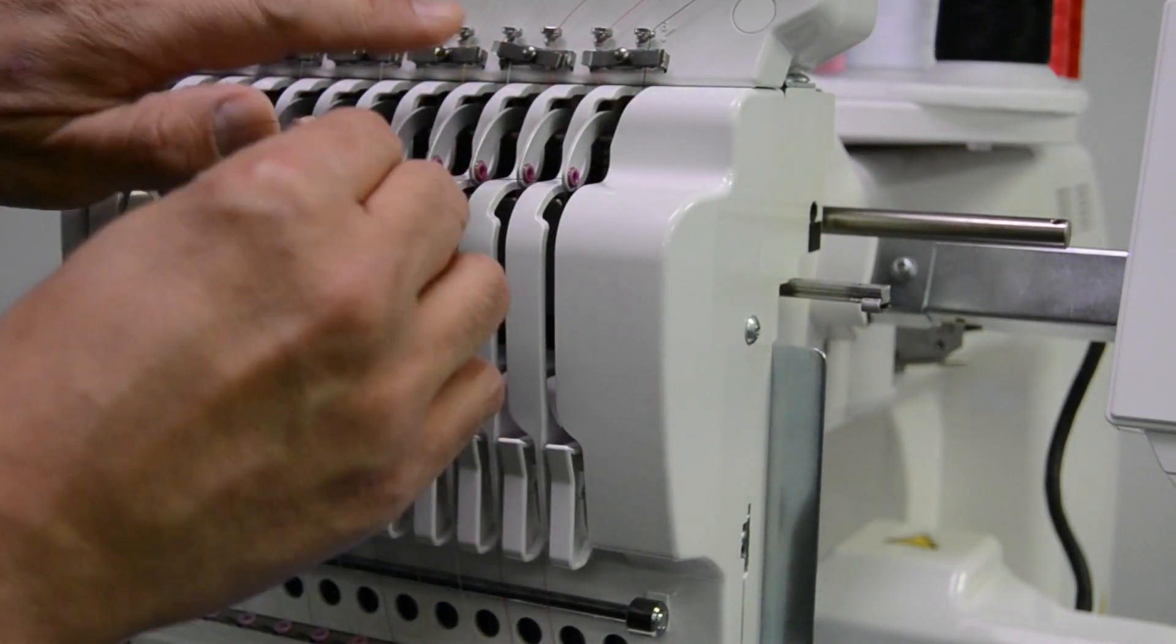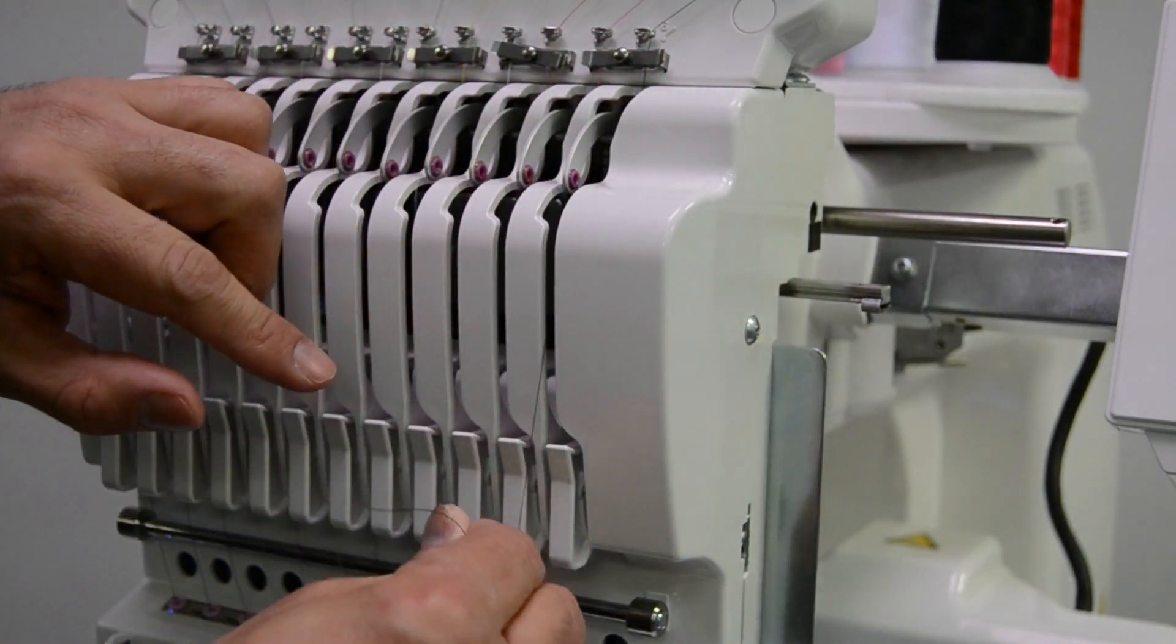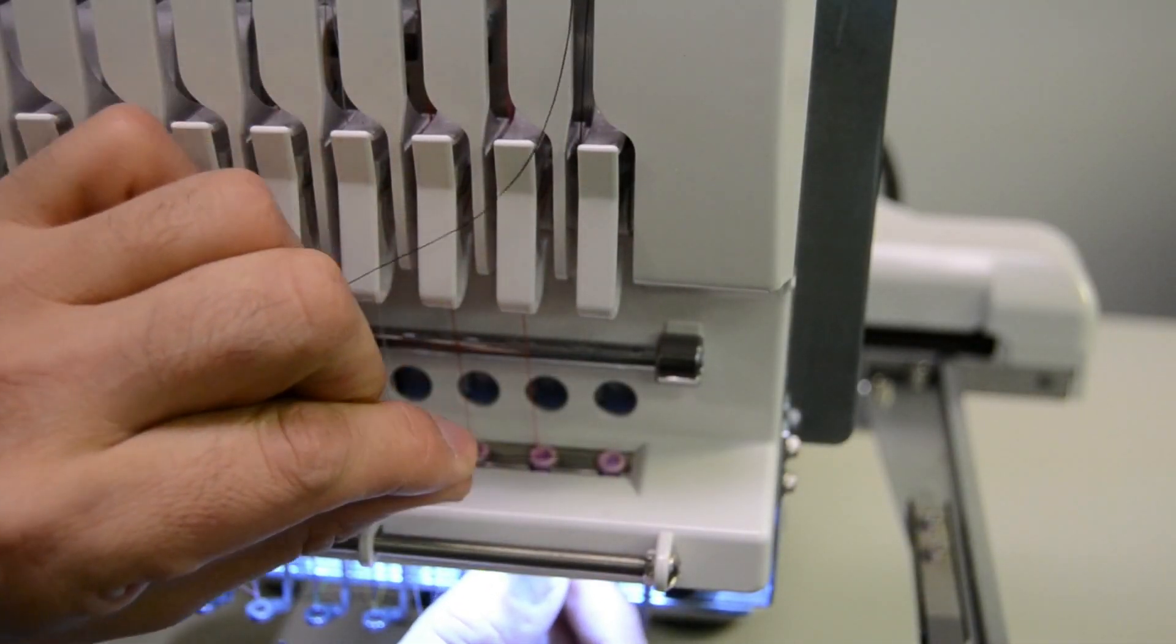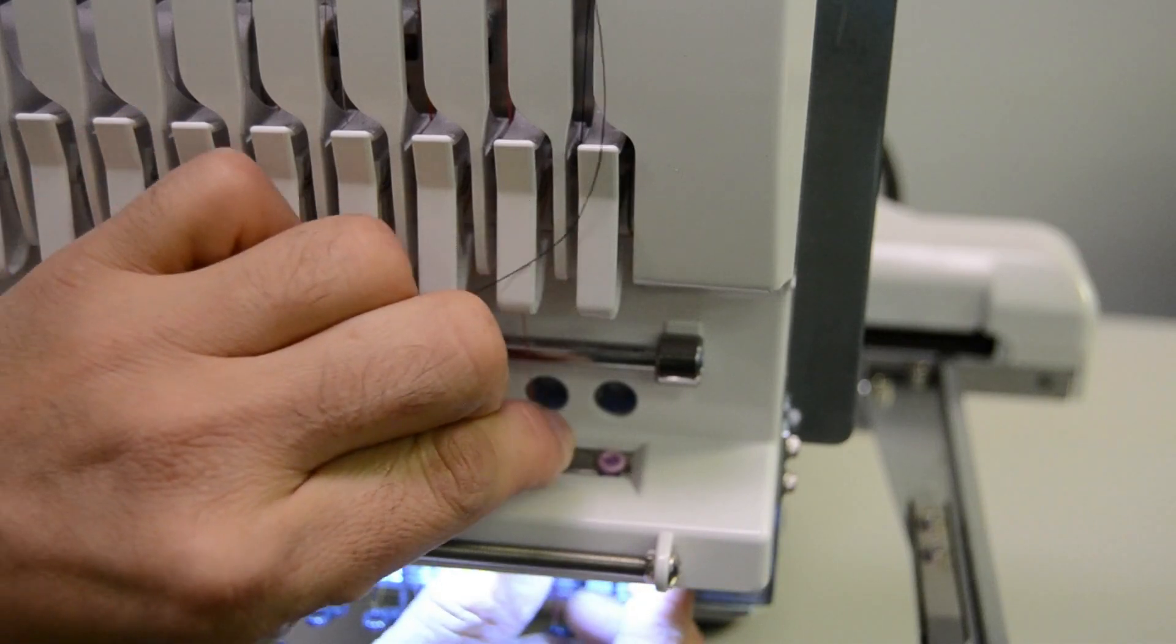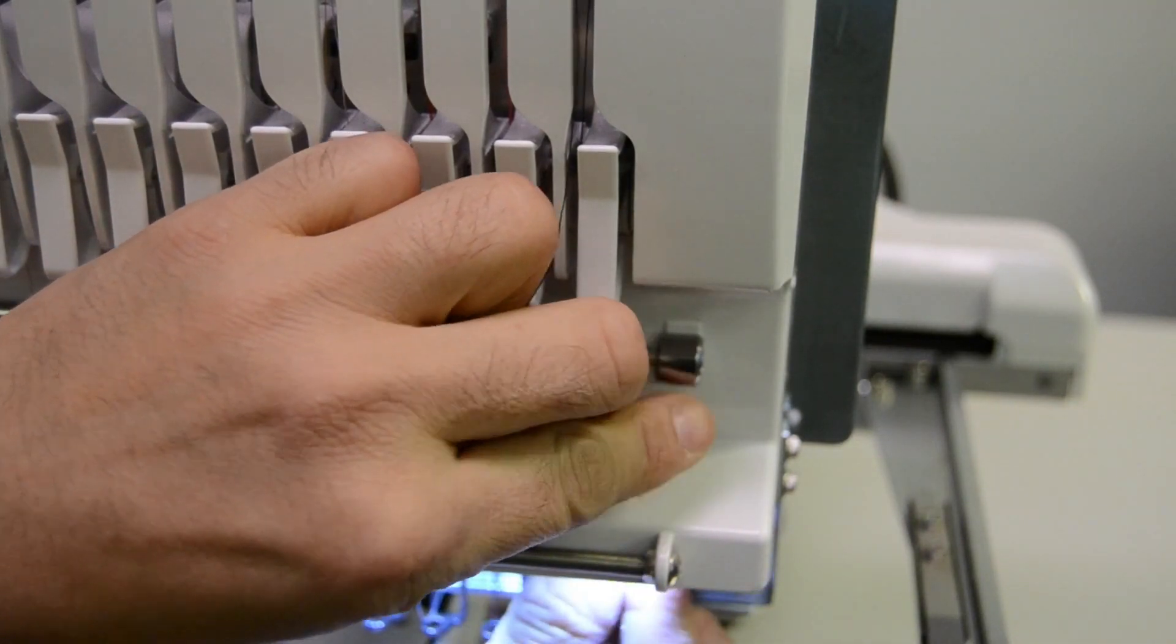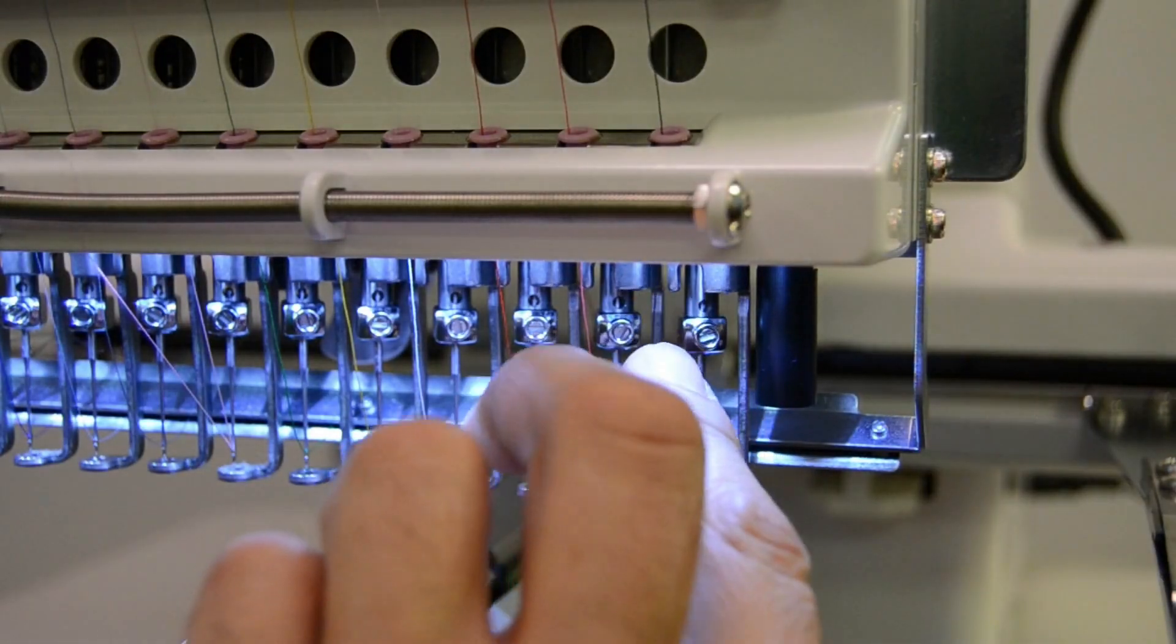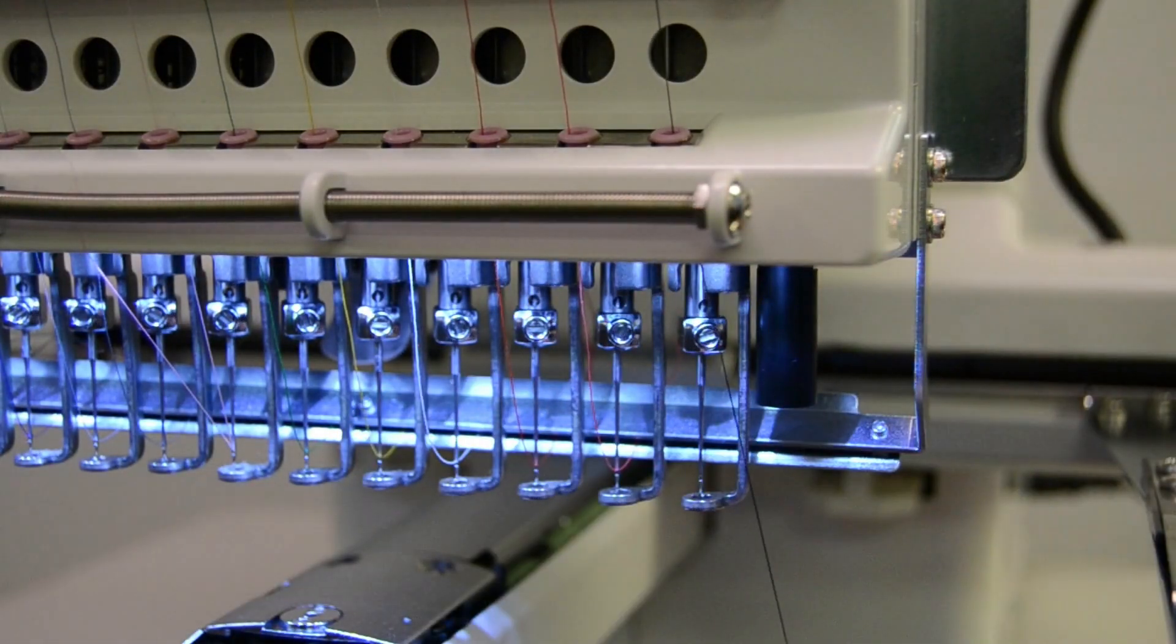Once the take-up lever is threaded, pass it down through that same slot and coming down from the take-up lever pass it down through the pink eyelet here which takes it below the lower head where it's ready to go into the needle. So once down through the eyelet we're ready to thread the needle.